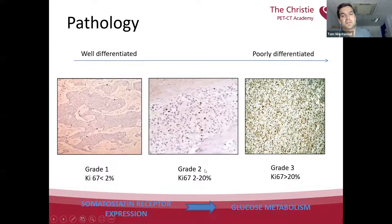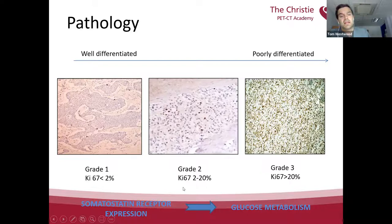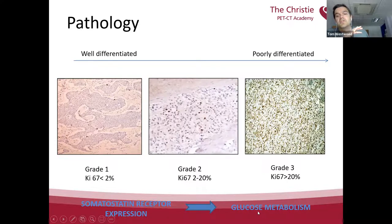Grade 1 and to some extent grade 2 tumours have one of their hallmarks: they overexpress somatostatin receptors very highly on the cell surface. As the tumour de-differentiates, there is less and less receptor expression and tumours become less able to be imaged by somatostatin receptor imaging. But as a balance, because they become much more aggressive, they upregulate glucose metabolism — a hallmark of aggressive tumours generally — and become more able to be imaged with FDG. So well-differentiated tumours are more appropriate for somatostatin receptor imaging, and poorly differentiated for FDG PET-CT.